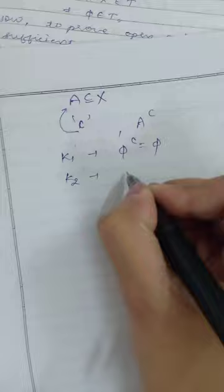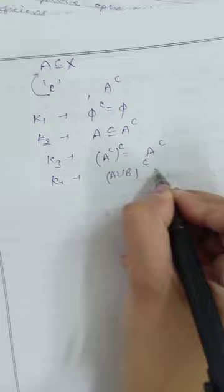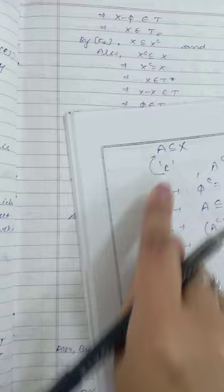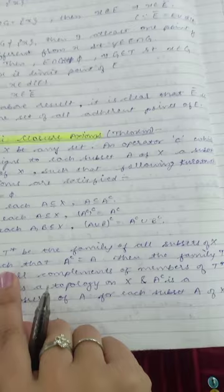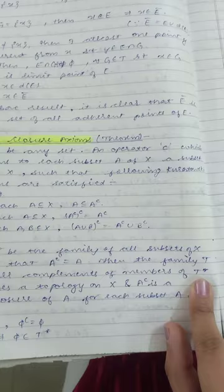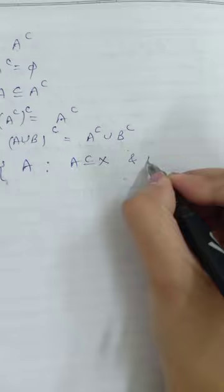K2 states that for any subset A of X, A must be a subset of A-Kuratowski. K3 states that the Kuratowski of A-Kuratowski is again equal to A-Kuratowski. K4 states that the Kuratowski of the union of two sets A and B equals A-Kuratowski union B-Kuratowski. We then define T* as the family of all subsets A of X such that A-Kuratowski equals A.